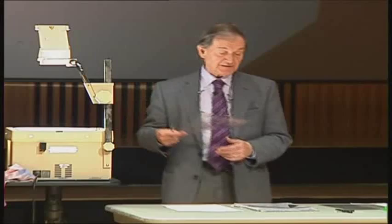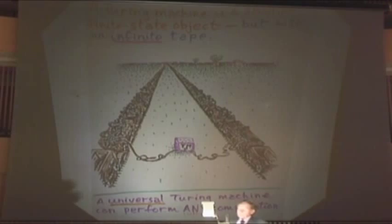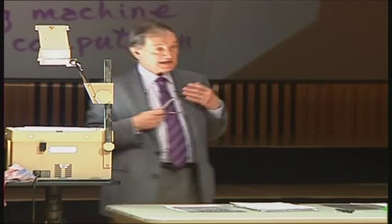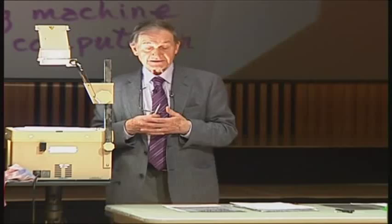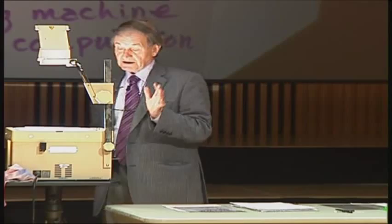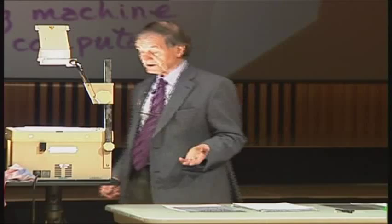A Turing machine is a very clever device. It is infinite in one respect: it has an infinite storage space. The machine itself is the finite object, and what is infinite is the potential of the storage space. A Turing machine is an idealized computer — idealized in three respects: it has unlimited storage space, it never makes mistakes, and it can go on for as long as you like without wearing out.